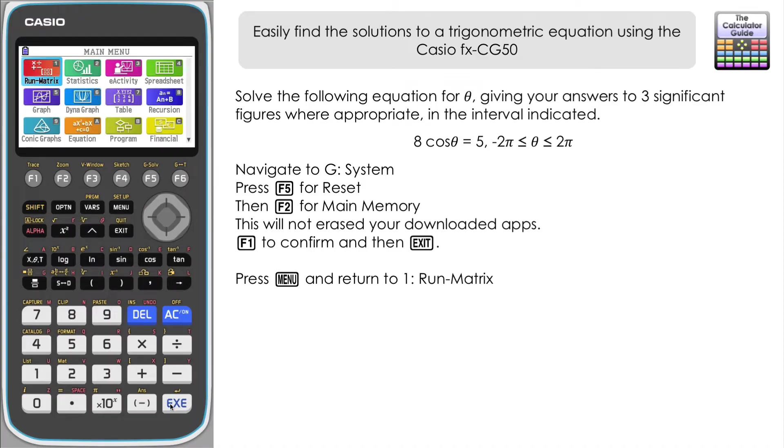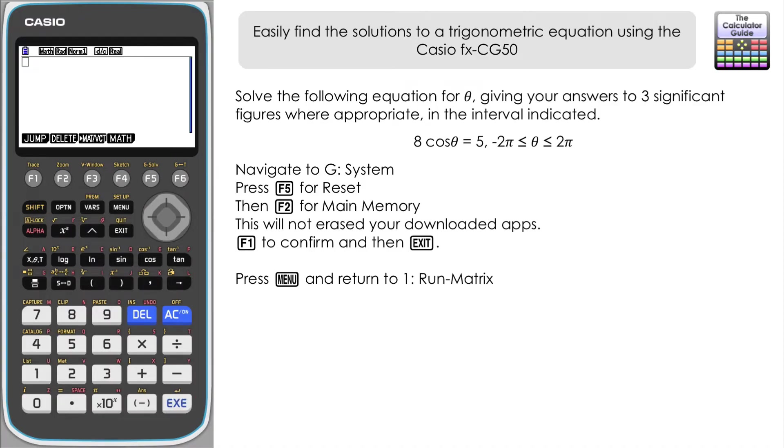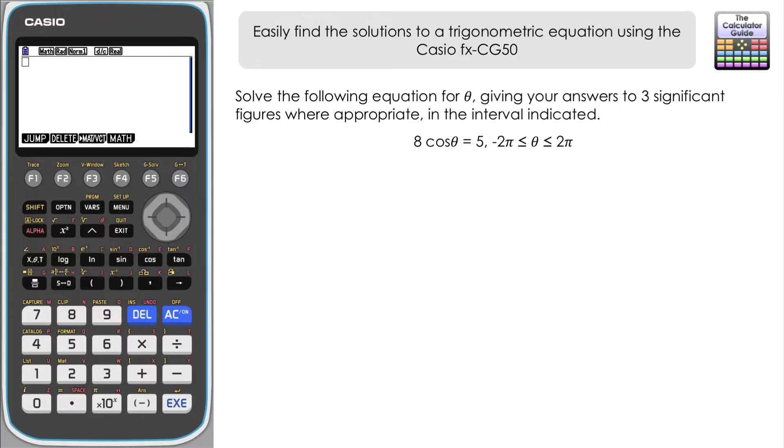Let's take a look at the first of two questions that we've got here. We have to solve the following equation for theta, giving your answers to three significant figures where appropriate in the interval indicated. And we've got an equation of 8 cos θ = 5, and we have an interval for theta there of -2π to positive 2π.